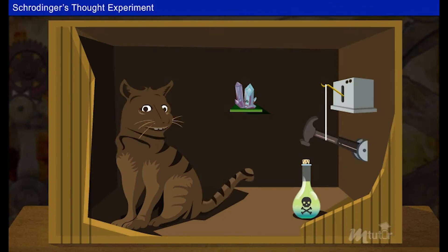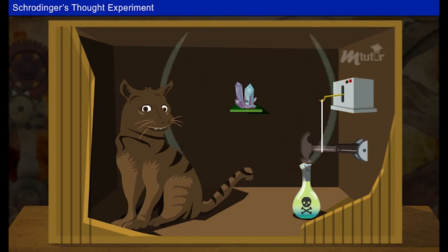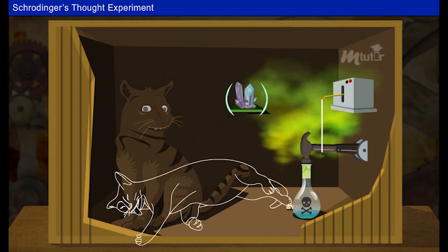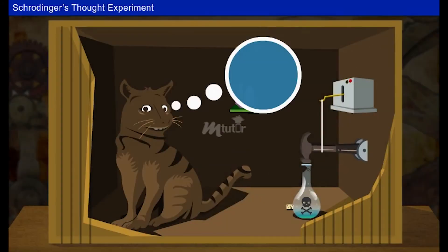Here, there is a 50-50 chance that one of the radio atoms gets decayed and releases some radiation within an hour, which might cause the counter connected with the hammer to shatter the poison bottle, which in turn may cause the cat to die. In an equally good chance, the wire might not get broken which allows the cat to stay alive.